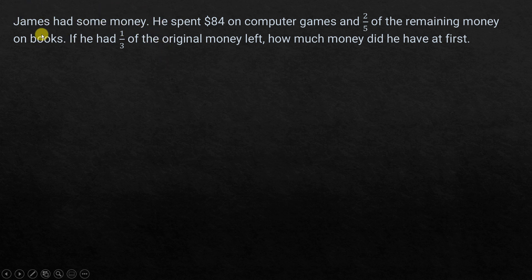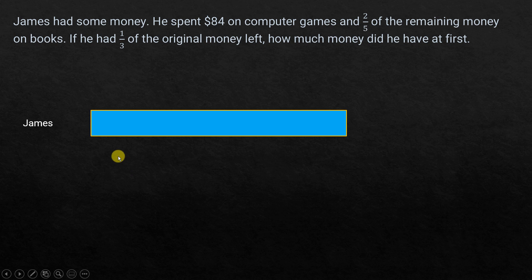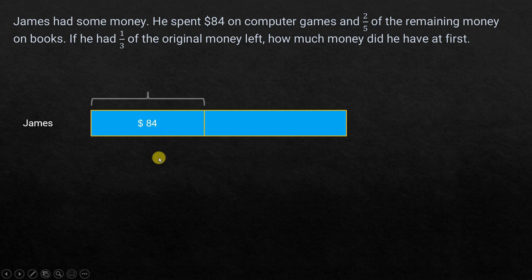Now we'll start. Let's draw a model for this. James had a lot of money, so the whole thing is James's money. He spent $84 on computer games — let's mark just that $84. He also spent two-fifths of the remaining money on books, meaning the remaining money is divided into five parts and two parts of it he spent on books.